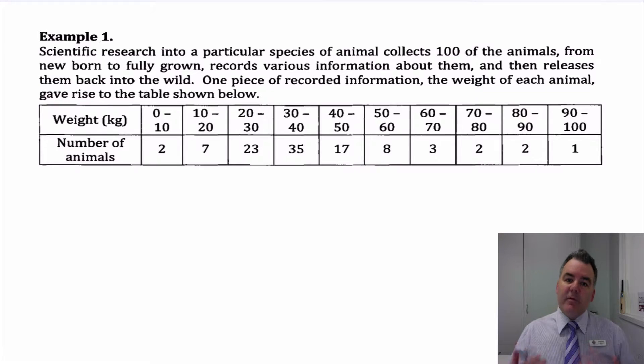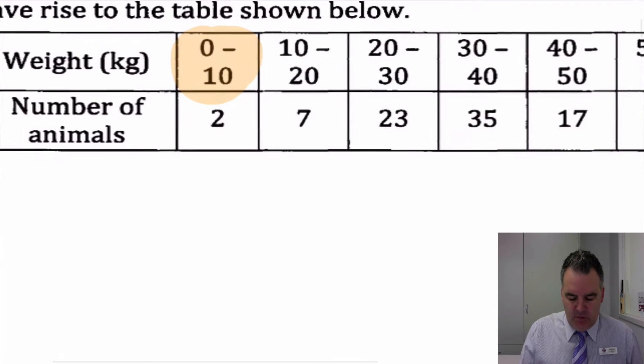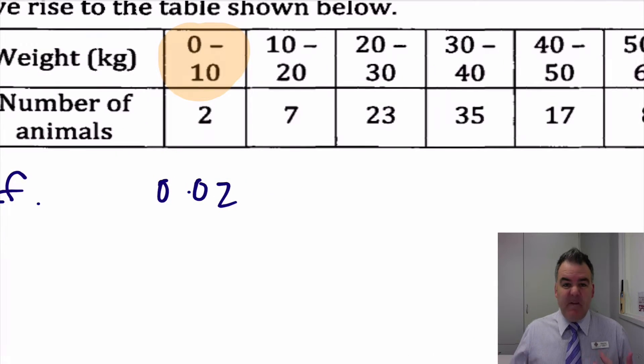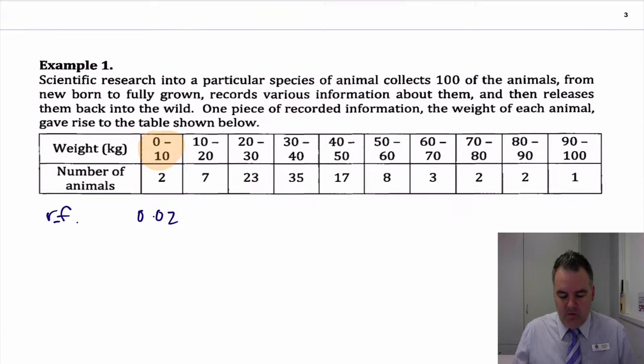So the relative frequency of getting an animal, let's say, between 0 and 10 would be 2 out of 100 or 0.02. So that's the relative frequency. I'll just call that RF, the relative frequency. Just the same as probability. So if we had 50 animals and three of them were in a certain category, then the relative frequency would be 3 out of 50. That's it. So it's just kind of like probability.